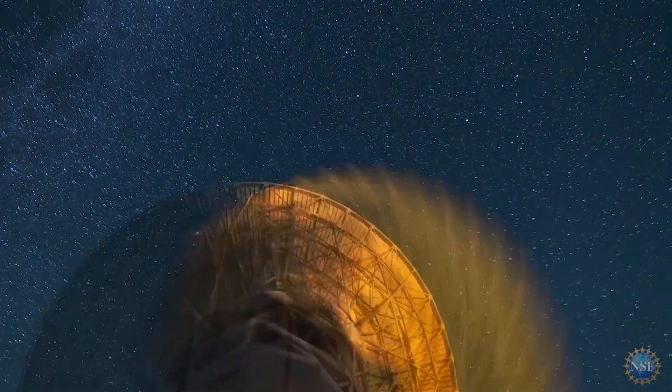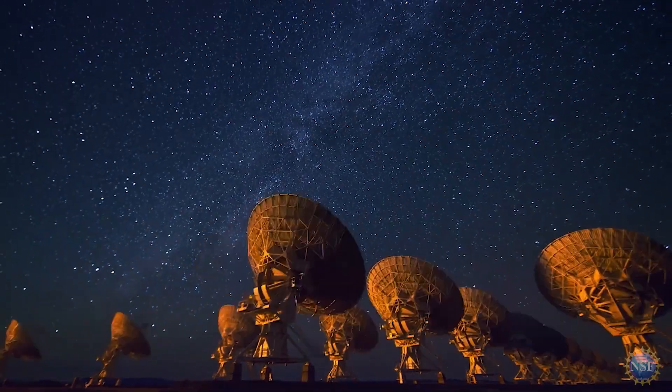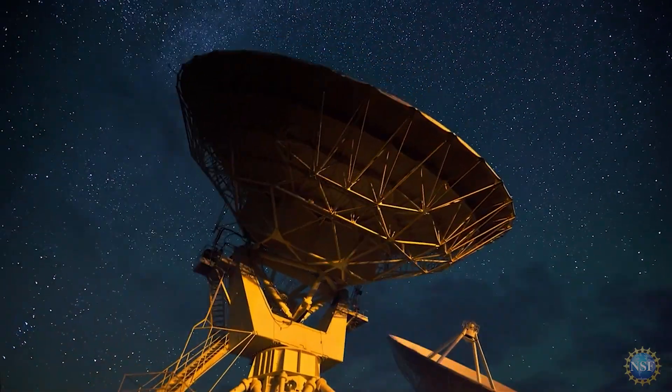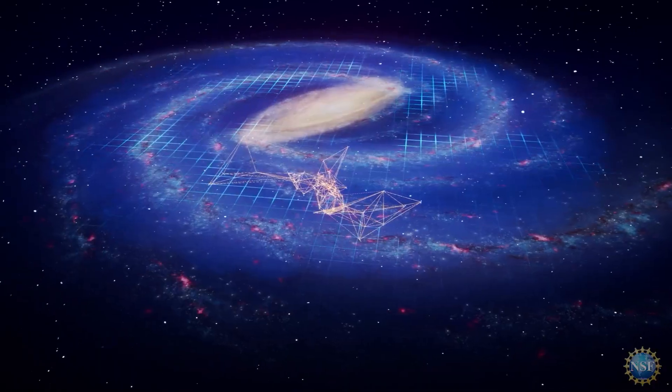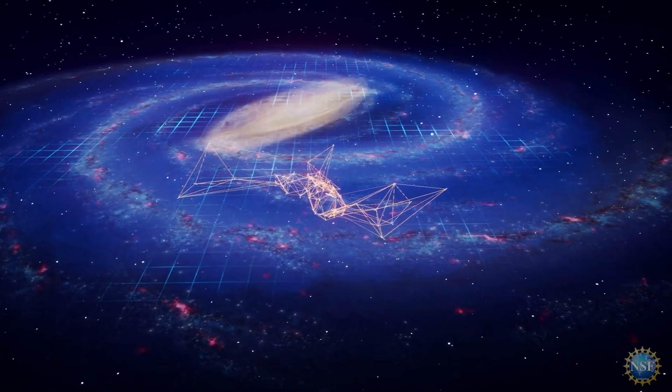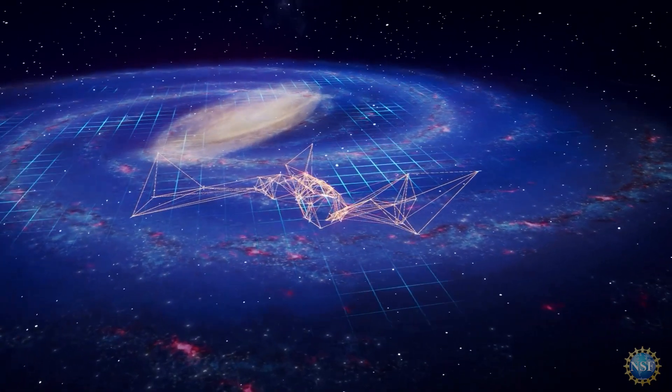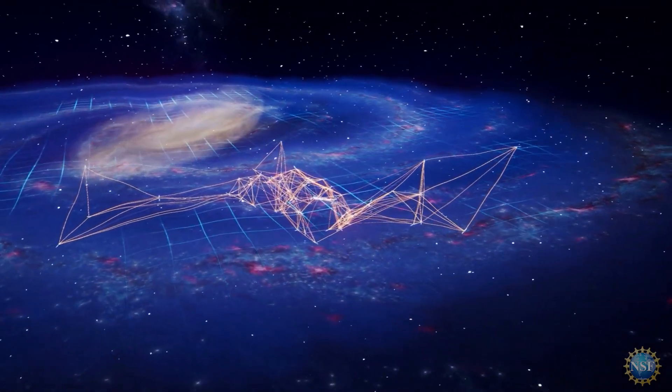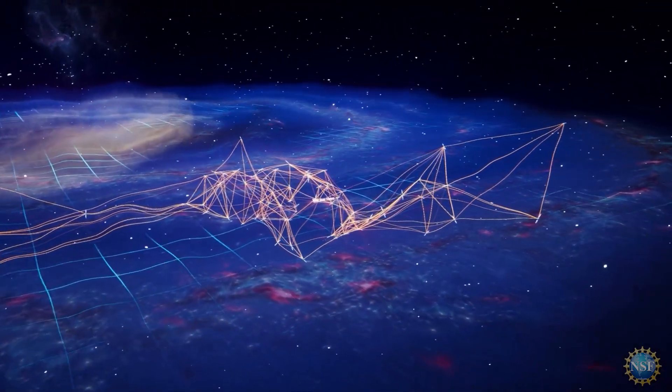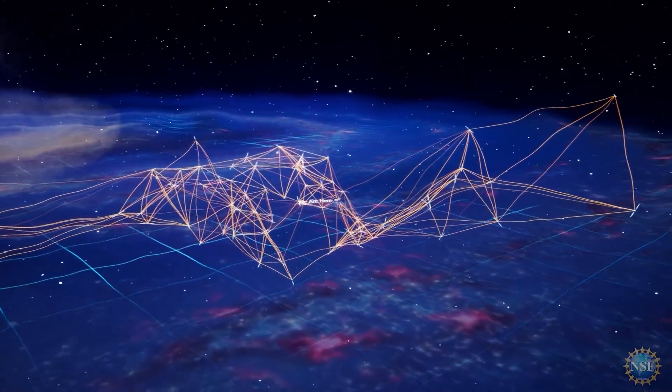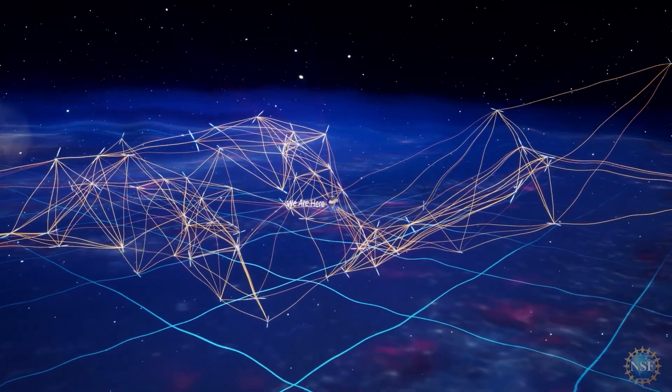These waves are light years long and can only be detected by the most extraordinary instruments. To measure these giant but subtle ripples in space-time, NANOGrav created a galaxy-sized detector using some of the most incredible objects in the cosmos, rapidly rotating neutron stars known as millisecond pulsars.